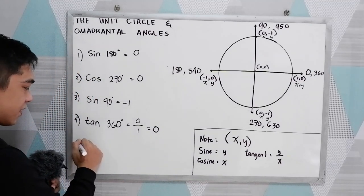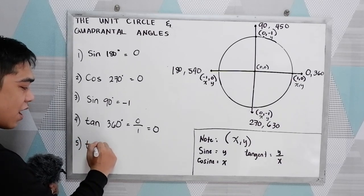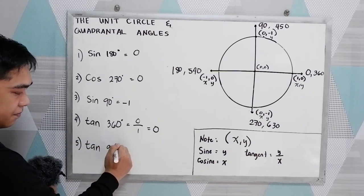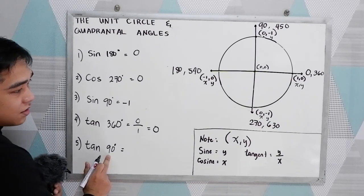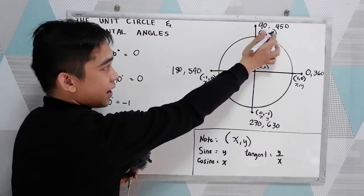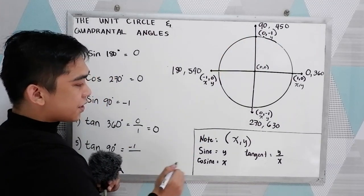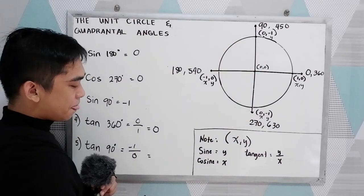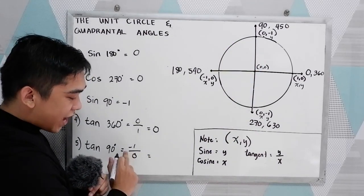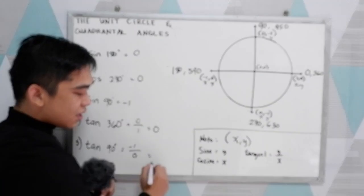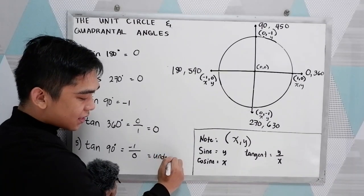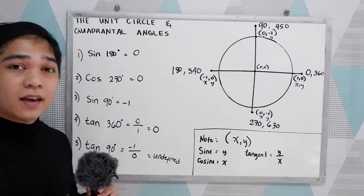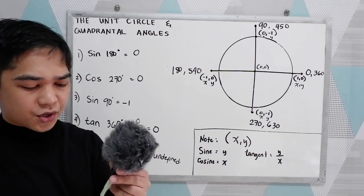Number 5: tangent 90°. Tangent is y over x. y is 1, and x is 0. So 1 over 0 — that gives us undefined, or in your calculator, a math error or syntax error.